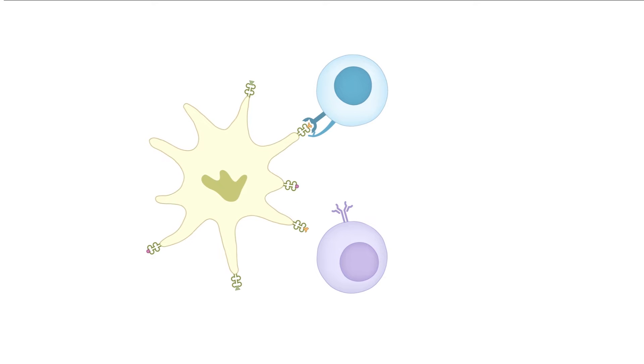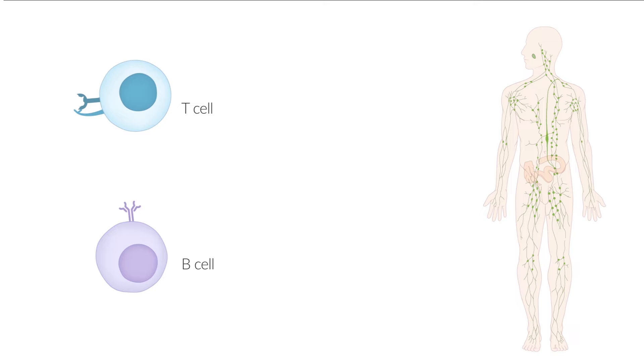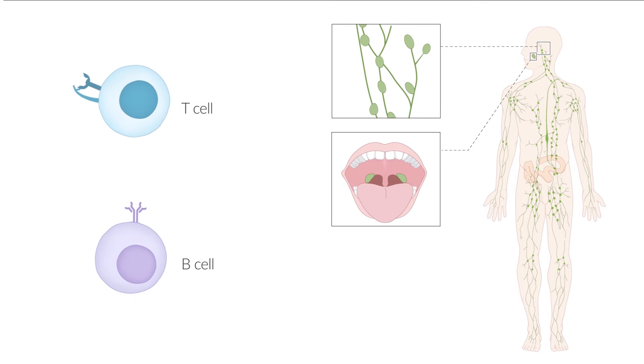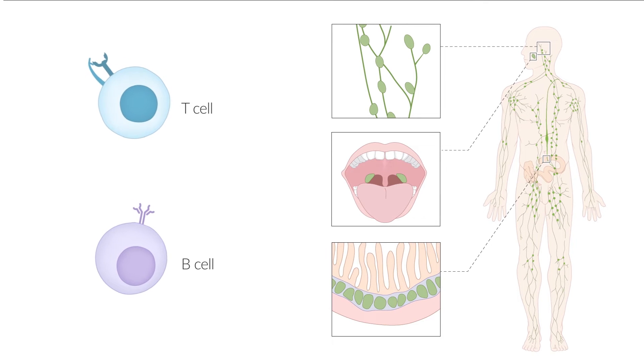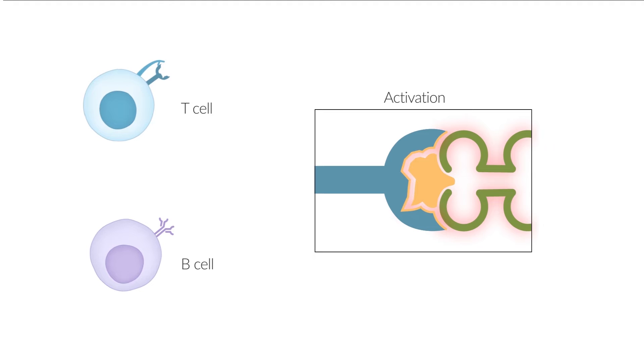The decisive cells of the humoral immune system are T and B cells. They circulate in the blood, but are also present in lymphatic tissues such as lymph nodes, tonsils, and intestinal mucosa. Their immune response is triggered by antigens. T and B cells become activated upon contact with the antigen specific to their receptor.